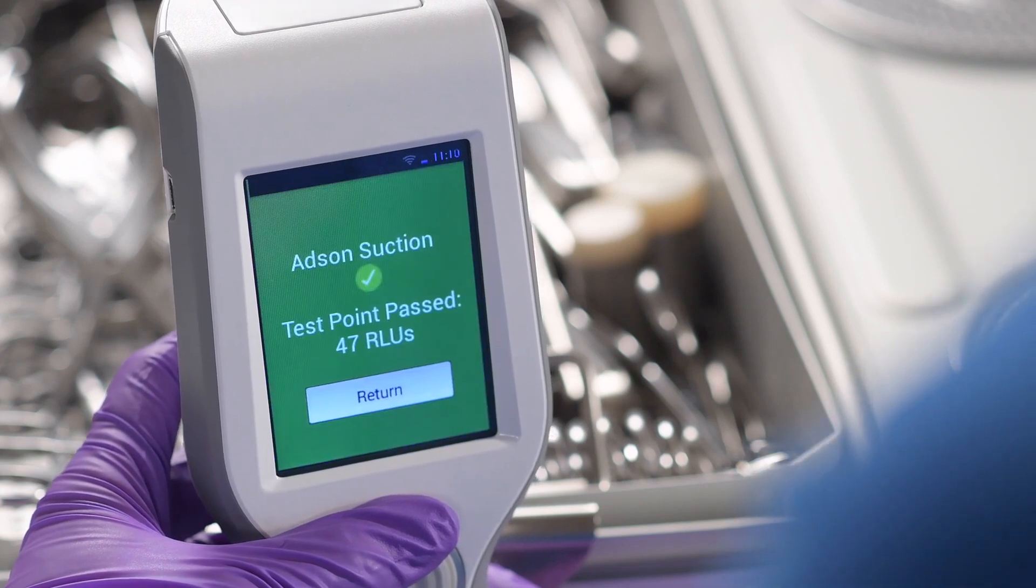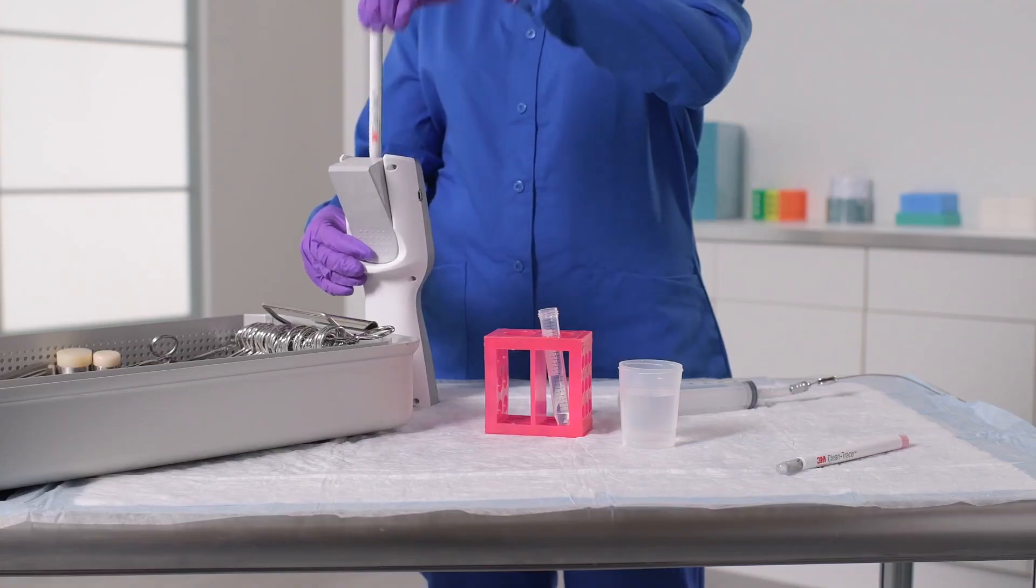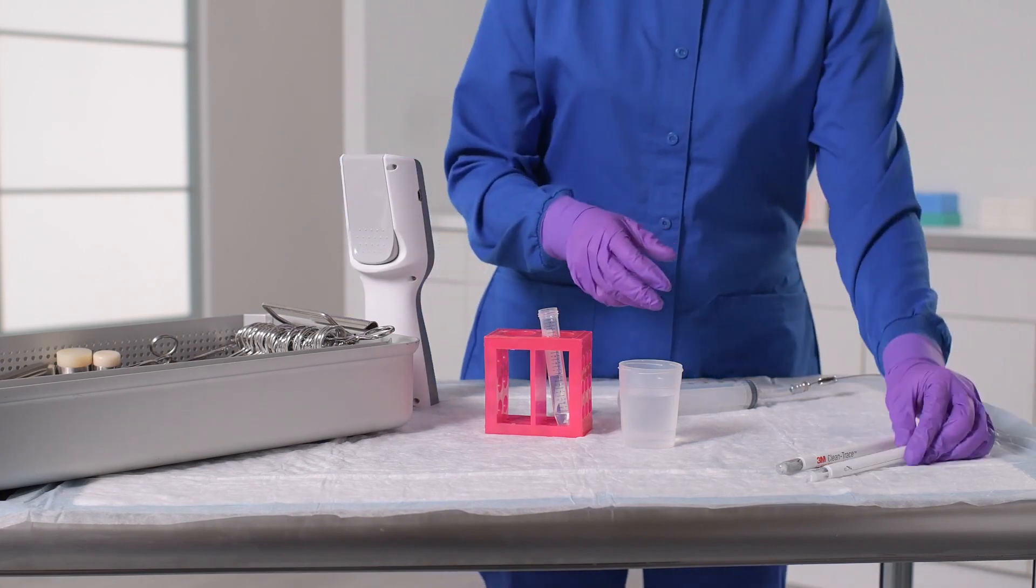The more contamination there is, the more ATP there will be, resulting in more light being produced and a higher RLU value.